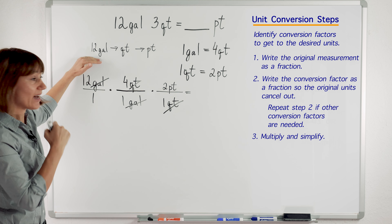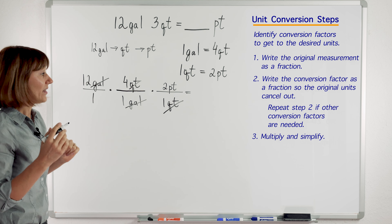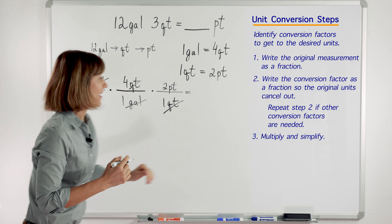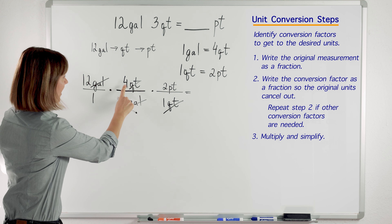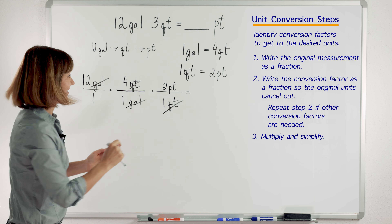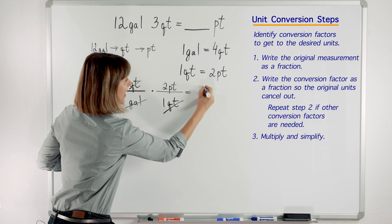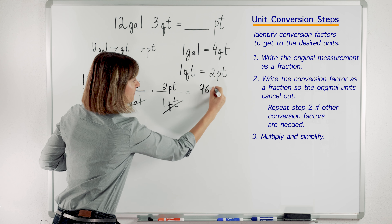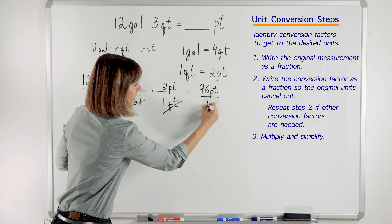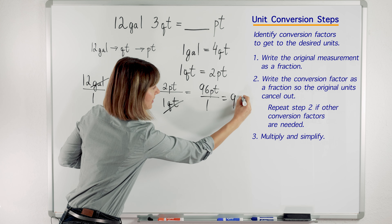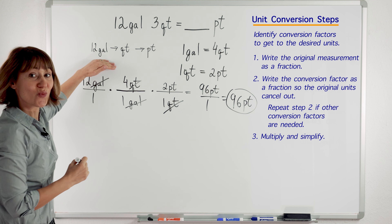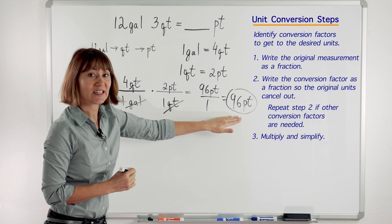So we are changing 12 gallons directly to pints. Now we can do the math — we multiply and simplify. 12 times 4 times 2. We will have 96 pints over 1 times 1 times 1, which is 1. So we will have 96 pints. We changed 12 gallons to 96 pints.